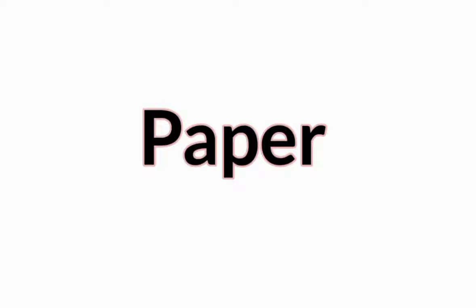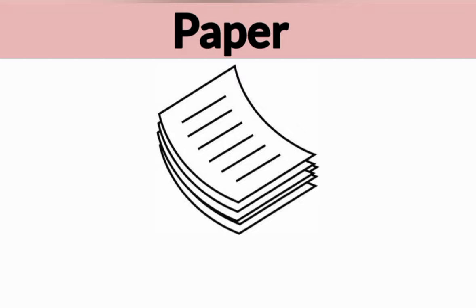Paper: Some of the most commonly used softwood trees for paper making include wood, pine and bamboo.